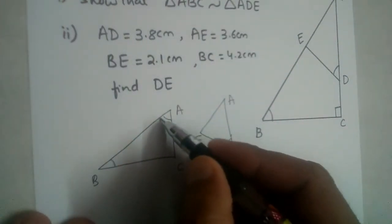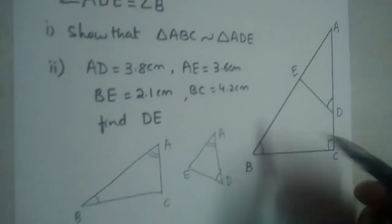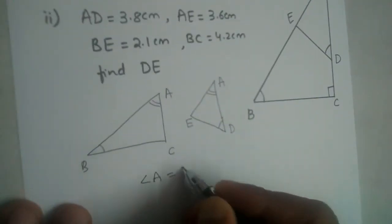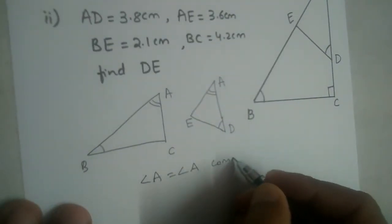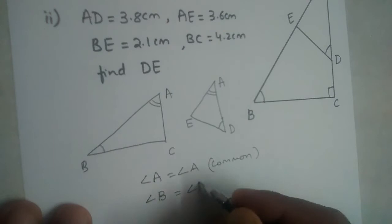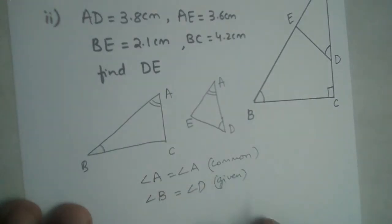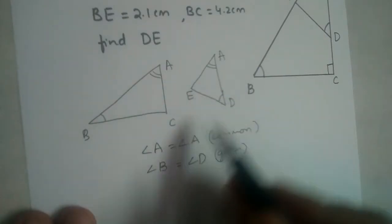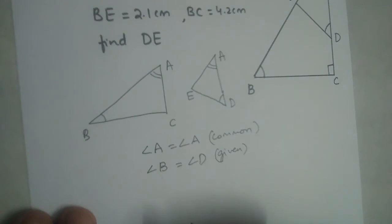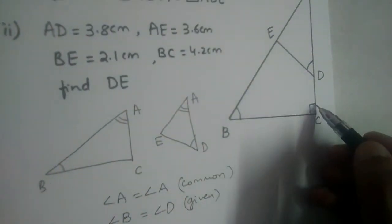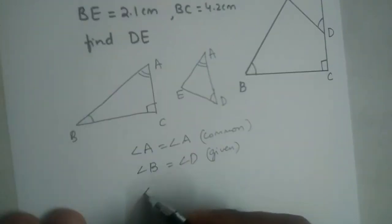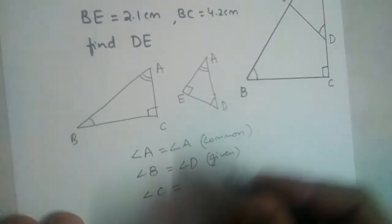Now, angle A is common. In this triangle, we are not changing angle A — it is common. So angle A is equal to angle A; it is the common angle. And angle B is equal to angle D — this is given to us. So in two triangles, if two angles are equal, then the third angle will also be equal by the angle sum property. This 90 degrees is given, so angle C will be equal to angle E.